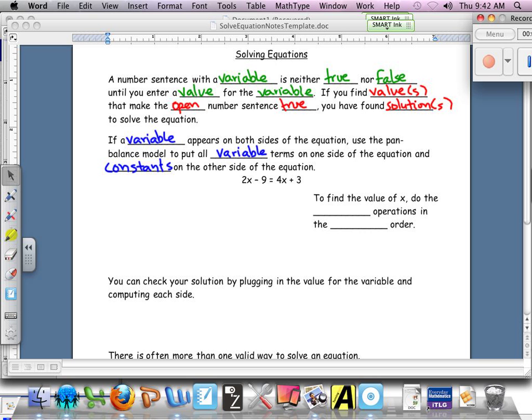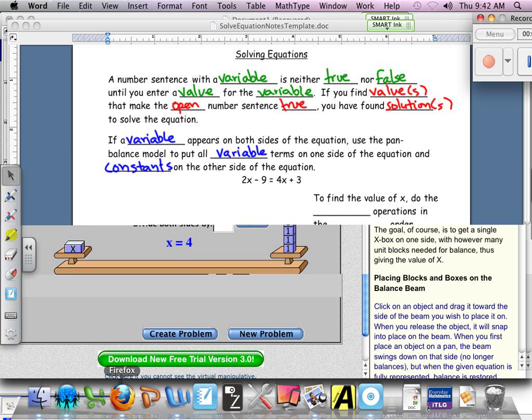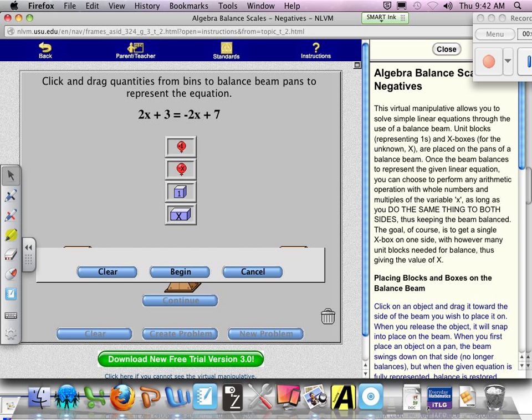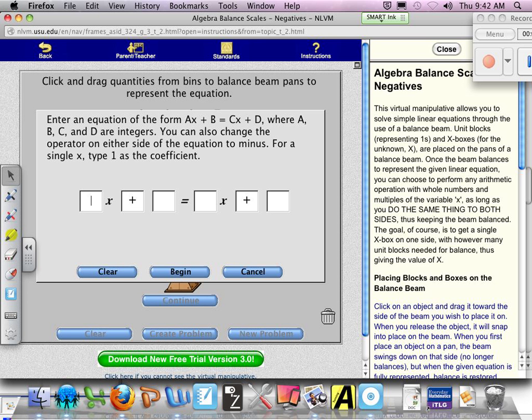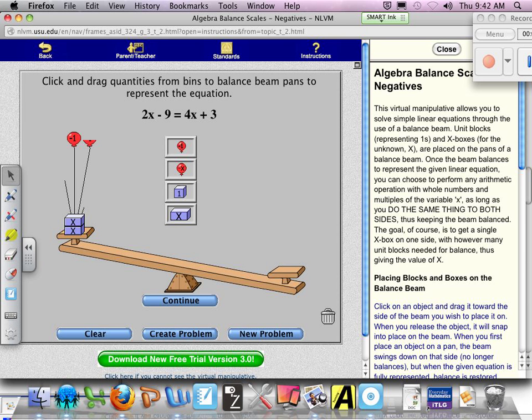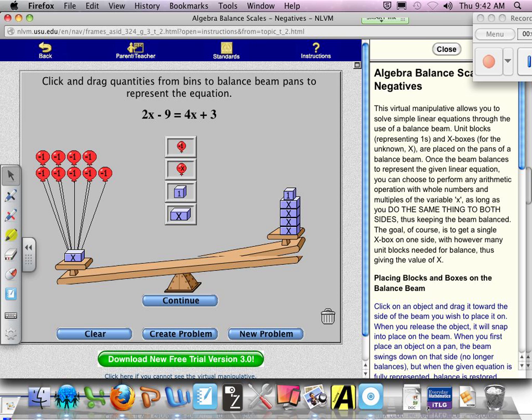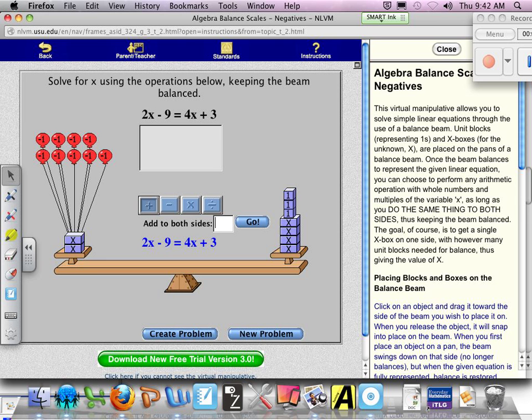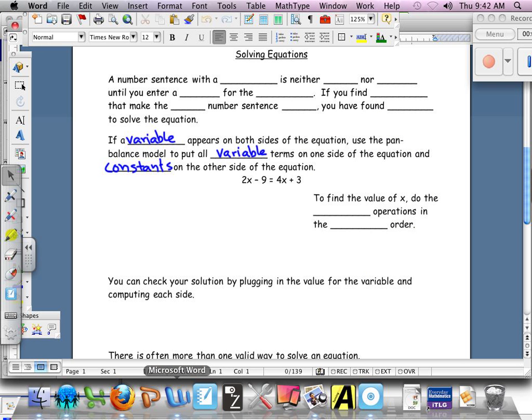So for the example here, we have 2x minus 9 equals 4x plus 3. So if we're using that model, let's see. I'm going to bring up that website and create a new problem. I'm going to have 2x minus, so you could make up your own problems on this website to try it out. Or if you have a homework problem where the numbers aren't too large, you could plug in the numbers and try it that way.